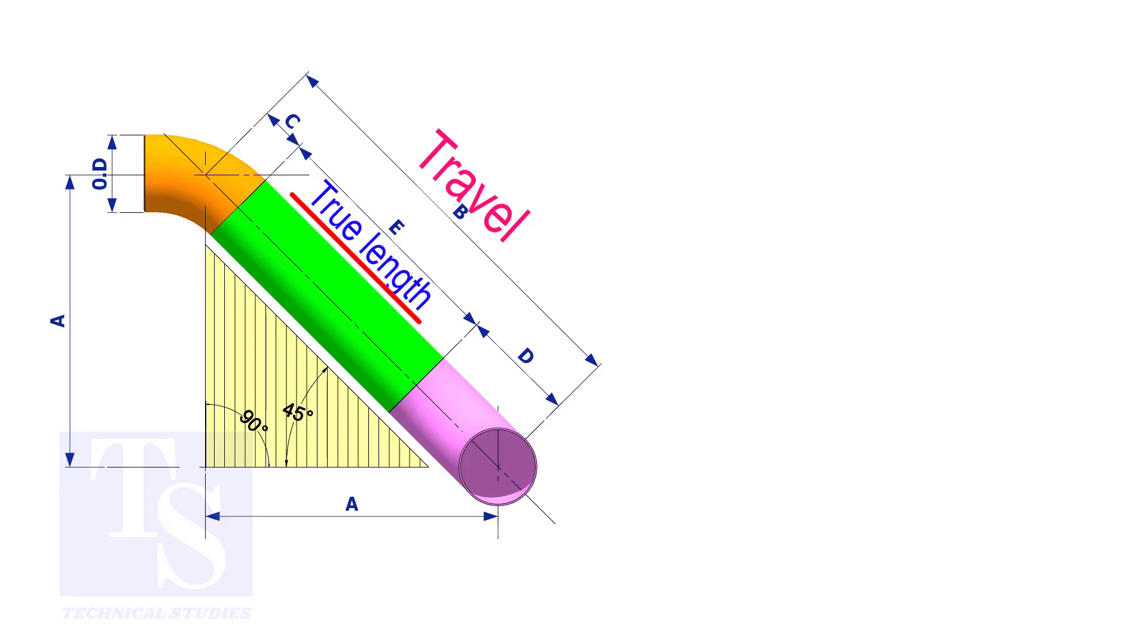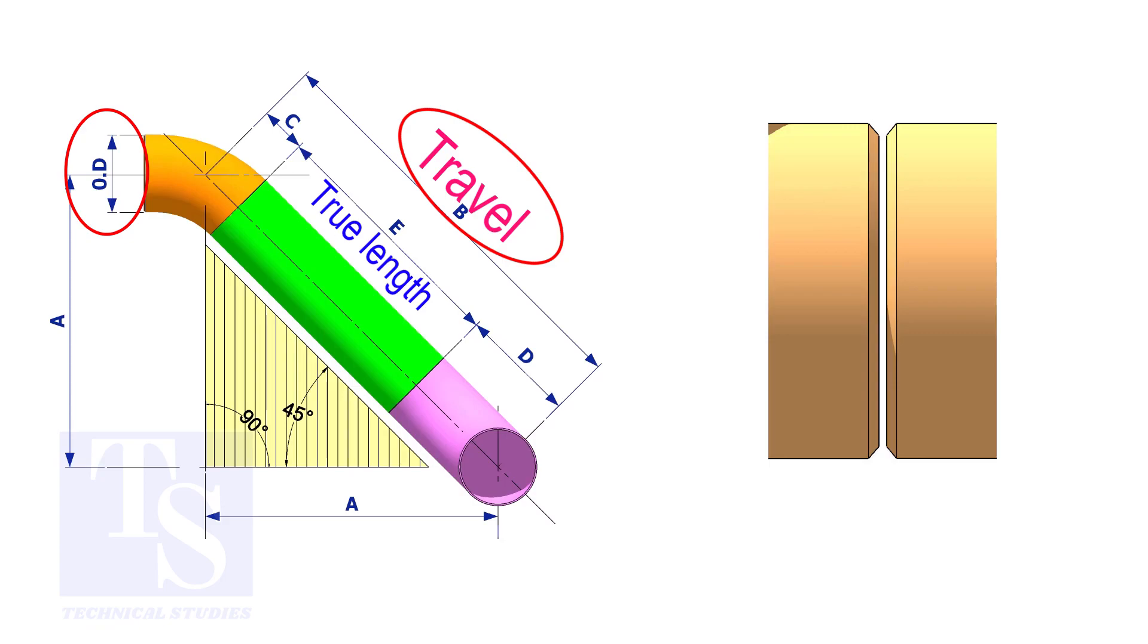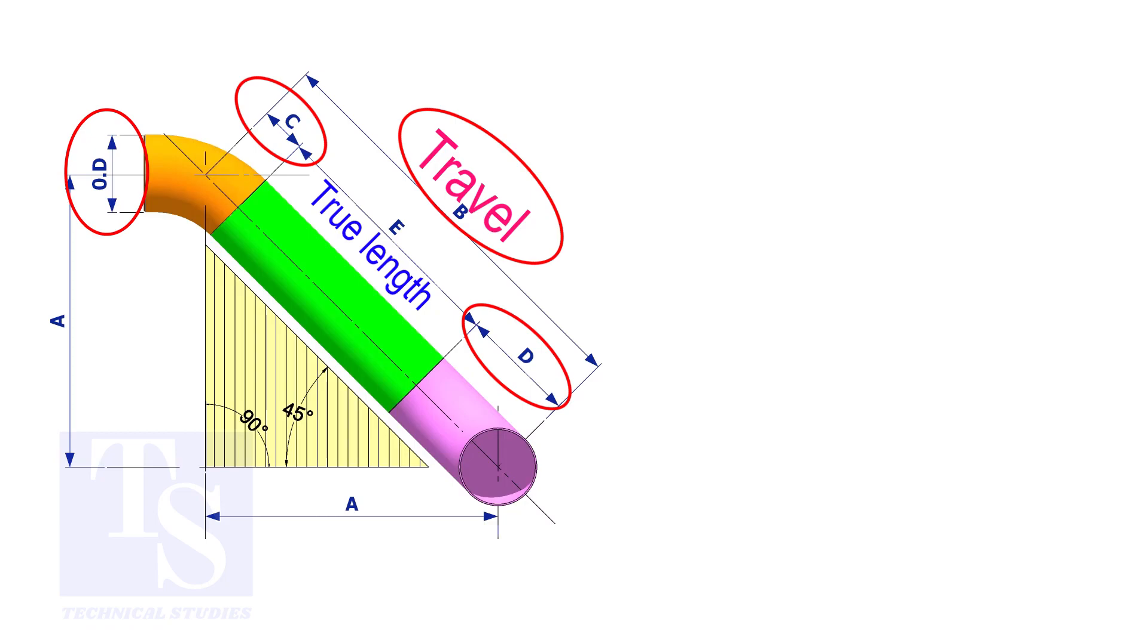To calculate the true length or the cut length, we need to know the travel length, the diameter of the pipe, the joint gap, and the elbow center. The elbow center is sometimes called takeoff length.